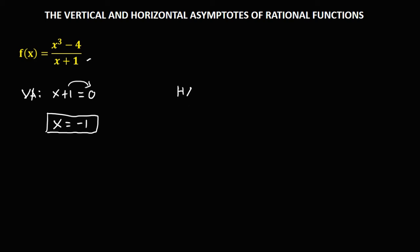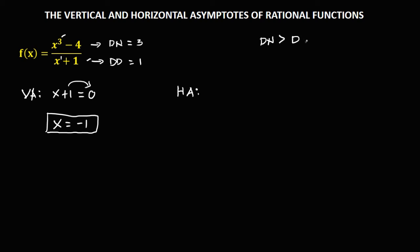For the horizontal asymptote, the degree of the numerator is equal to 3 and the degree of the denominator is equal to 1. Since the degree of the numerator is greater than the degree of the denominator, this rational function has no horizontal asymptote. Therefore, there is no horizontal asymptote.